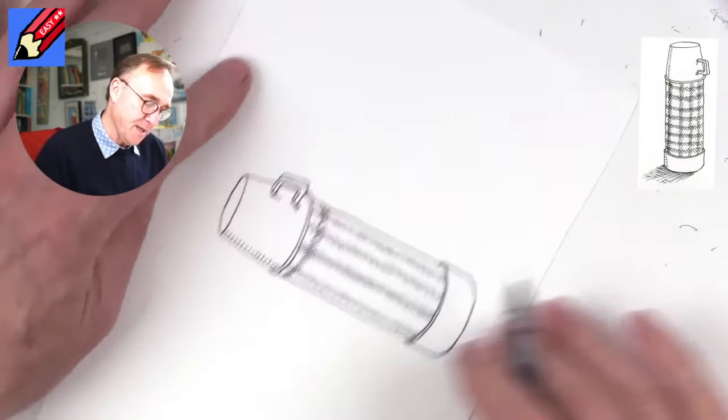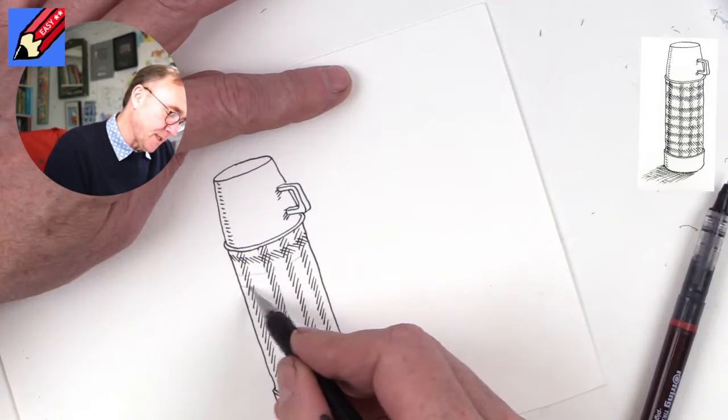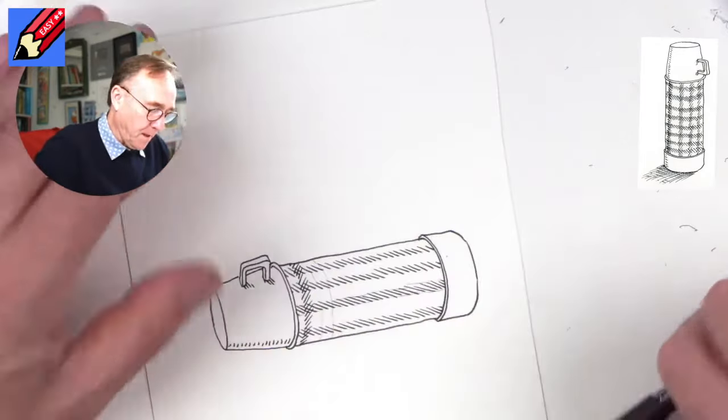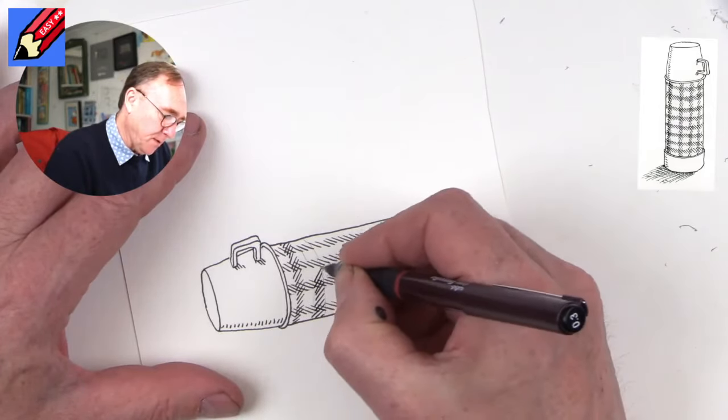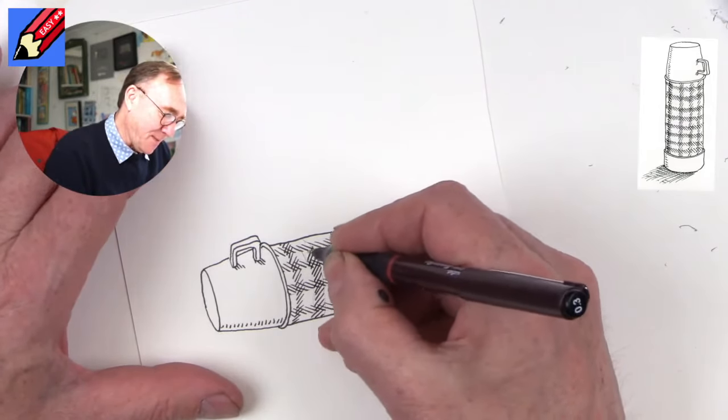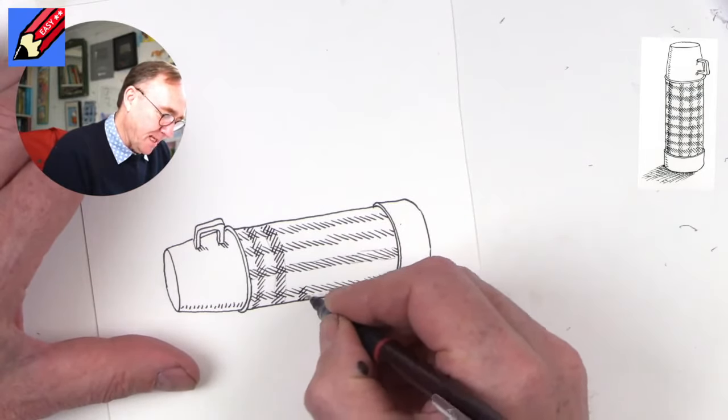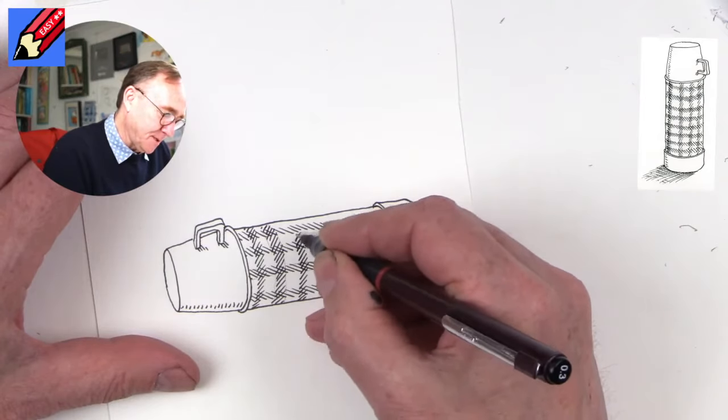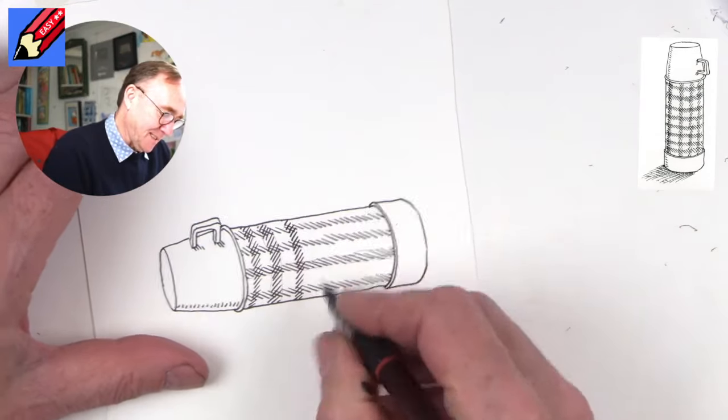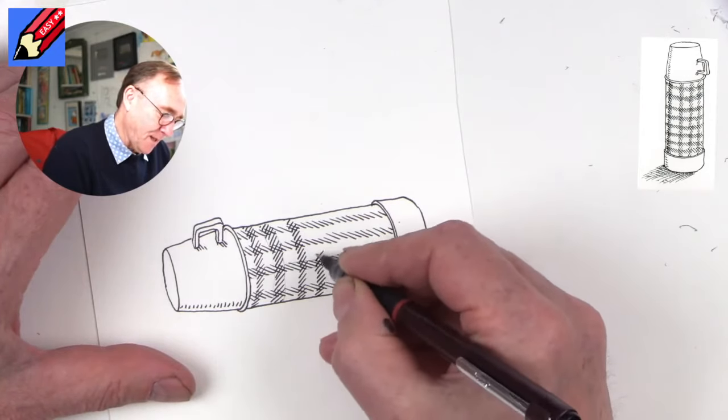Now again, you might find it easier to draw these little curves to draw within. Some people are very persnickety—they want it to be absolutely exactly right. Some people are a bit more slapdash like I am and just kind of just draw it. So that's what I'm doing, and you want to have this kind of curve in this hatching.